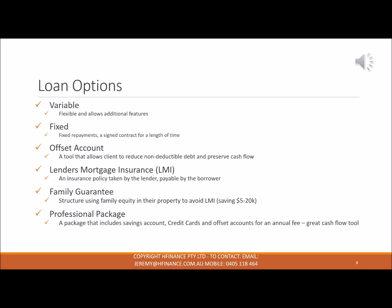Next, talking about Lenders Mortgage Insurance, or LMI. This is an insurance policy taken out by the lender on behalf of the client, engaging an insurance company. This policy is taken out on your behalf because the borrower is deemed to be a higher risk due to a lower deposit. The trigger point for most lenders is if you're borrowing greater than 80% of the value of the property; some lenders will allow up to 85% before triggering the policy. This policy is payable by the borrower at settlement, though most banks will allow you to add that amount to the loan and capitalise it.